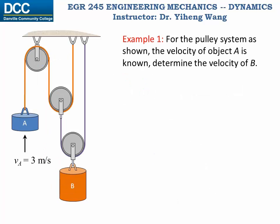So now let's apply our strategy to this example, which is a little more complicated than the previous one. Again, we have two objects that are connected through this multiple pulley system. We know the velocity of particle A, and we need to find the velocity of B.